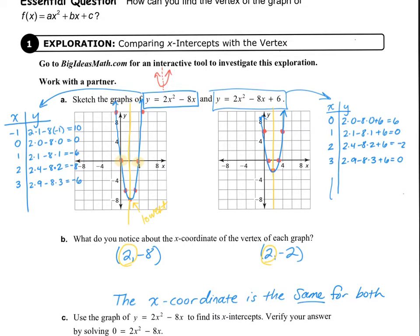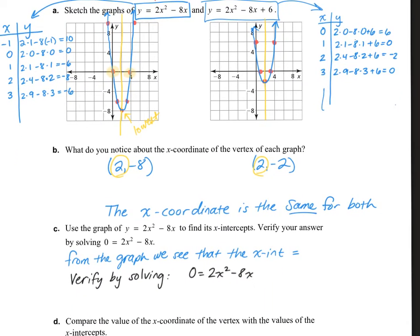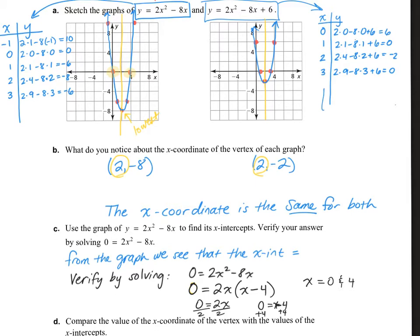Now we're going to prove that that's the case by solving the equation set equal to 0. We need to first factor out the 2x — the largest factor — so we're left with x minus 4. That means 0 equals 2x, and also 0 equals x minus 4. Solving both: divide by 2 on the first, we get 0; adding 4 on both sides of the second, we get positive 4. So our x-intercepts are 0 and positive 4, which matches what we saw on the graph.